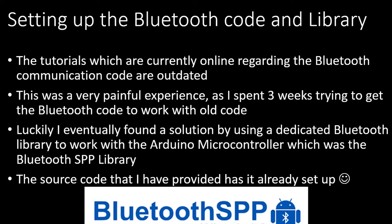When it comes to setting up the Bluetooth code and library, the tutorials currently online regarding Bluetooth communication code for Android apps are pretty much outdated. This was a very painful experience — I spent 3 weeks trying to get the old Bluetooth code to work and I was banging my head against the wall. I eventually found a solution using the Bluetooth SPP library, which is freely available on GitHub, and the source code I provide already has that library set up.